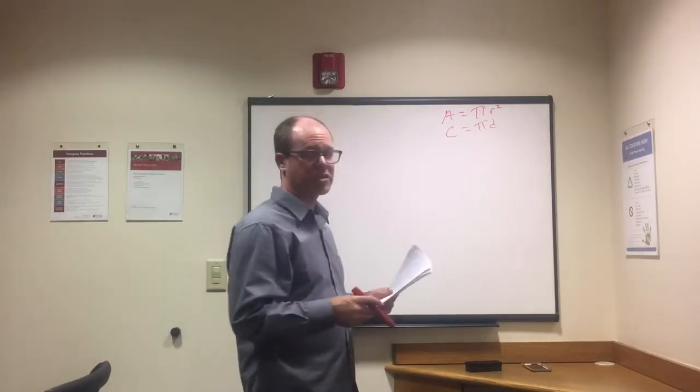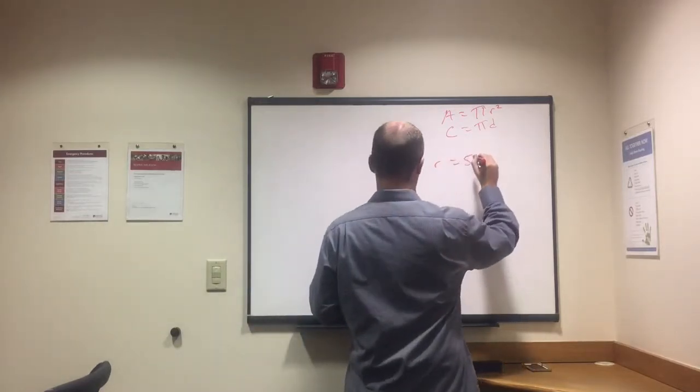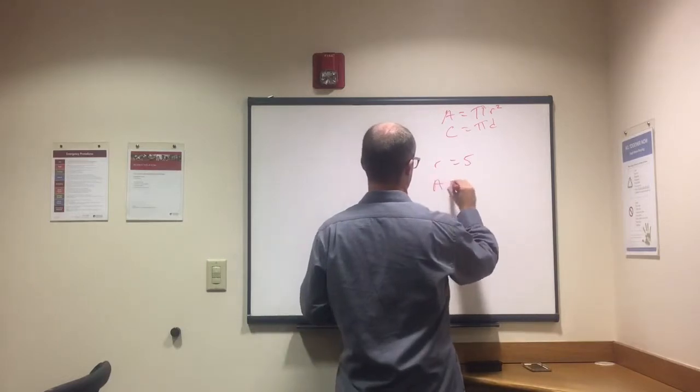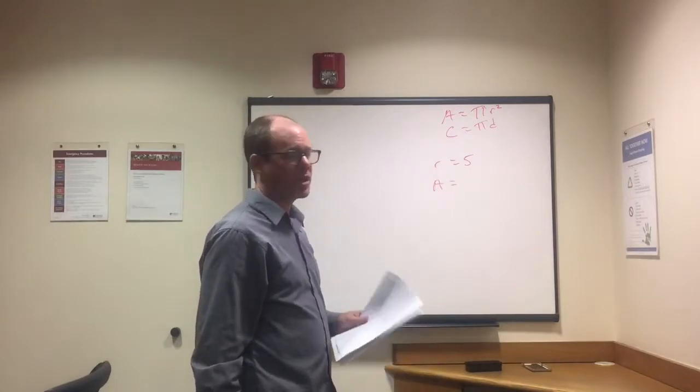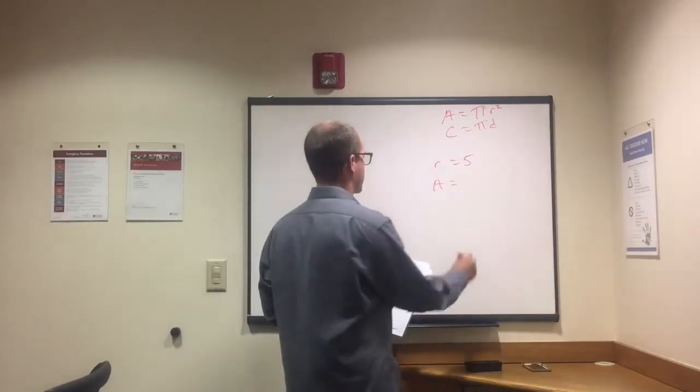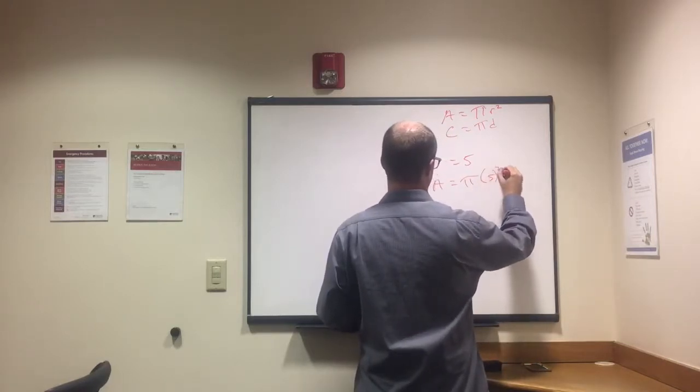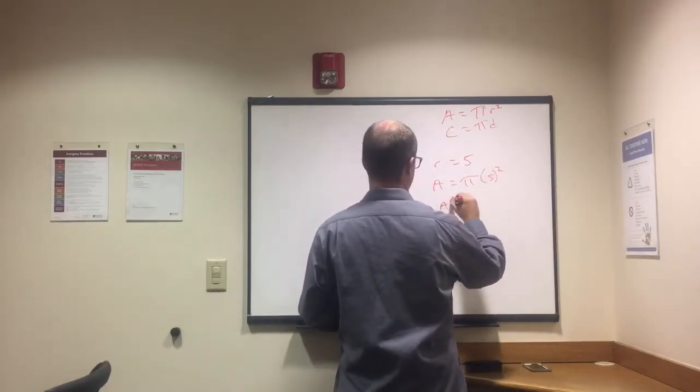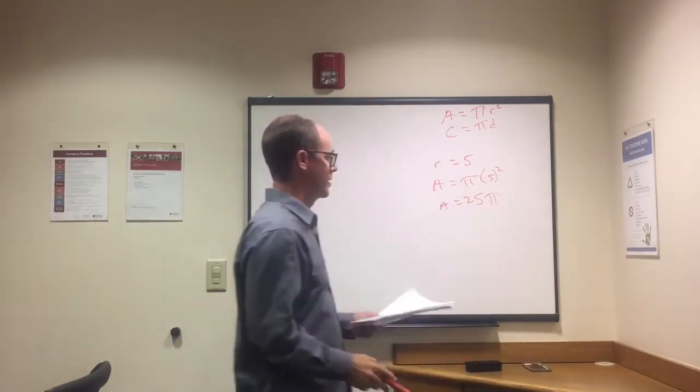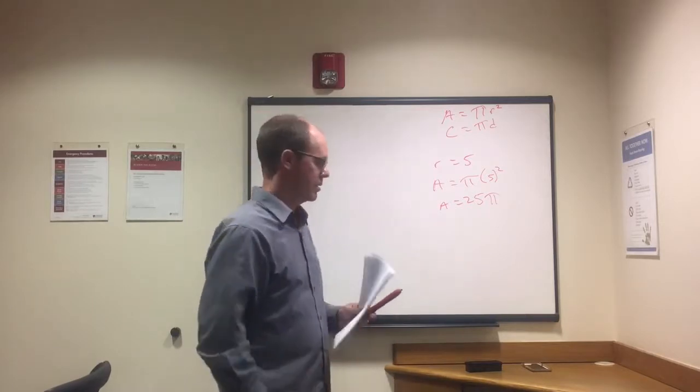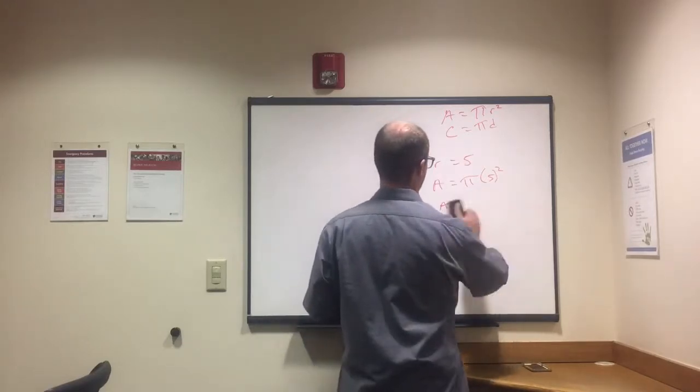Let's look at a few questions. If radius equals five, what is area? We have area equals pi r squared. Area equals pi times five squared. Five squared is 25, so area equals 25 pi. Pretty straightforward as long as we know the formula.